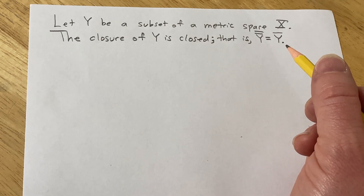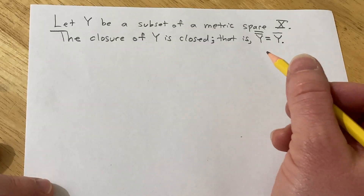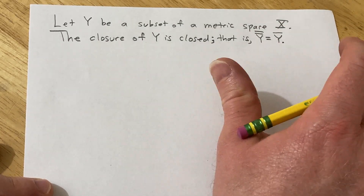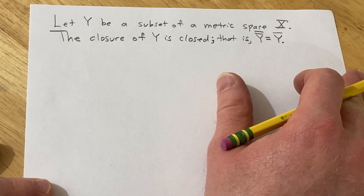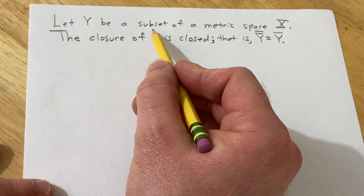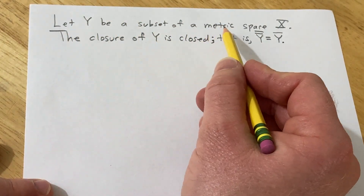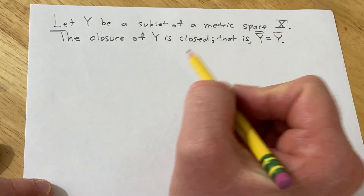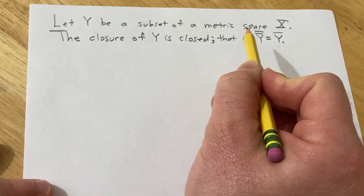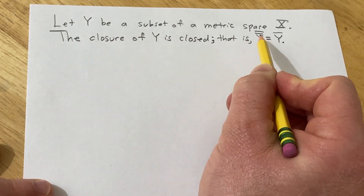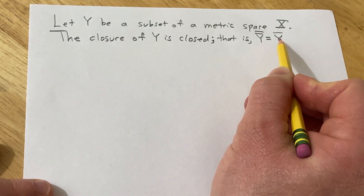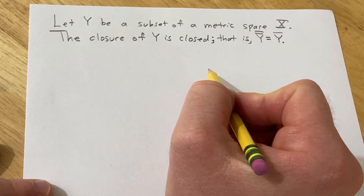Hello, in this video we're going to do a proof and we're going to go through it very, very carefully. Let Y be a subset of a metric space X. The closure of Y is closed — that is, the closure of the closure of Y is equal to the closure of Y.